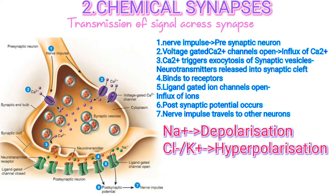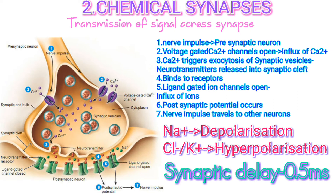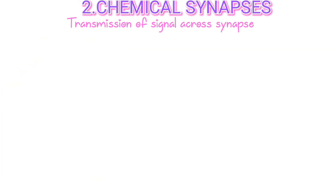The postsynaptic neuron receives the chemical signal and generates a postsynaptic potential. The synaptic delay is the time required for these processes to occur at a chemical synapse. This is why chemical synapses relay signals more slowly than electrical synapses. The synaptic delay is 0.5 milliseconds.